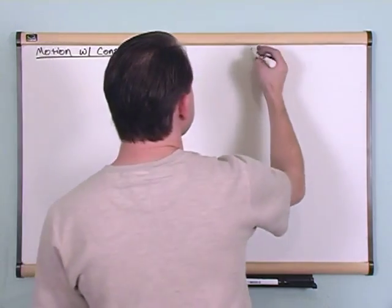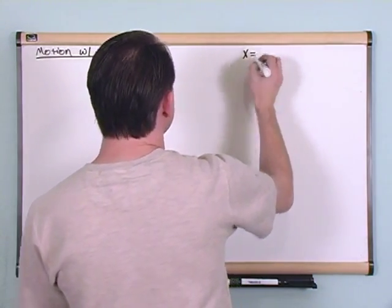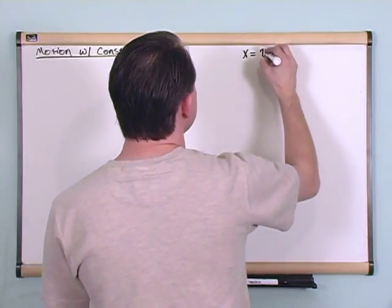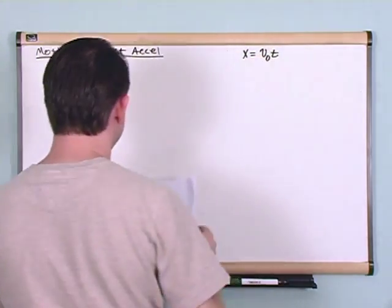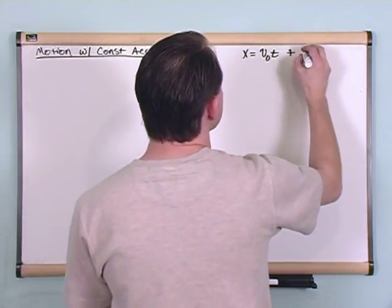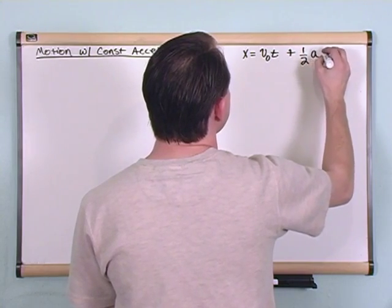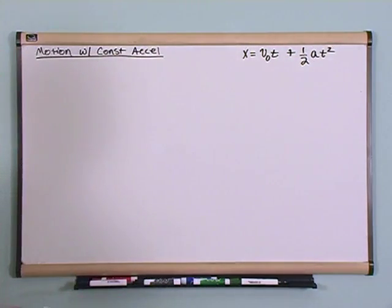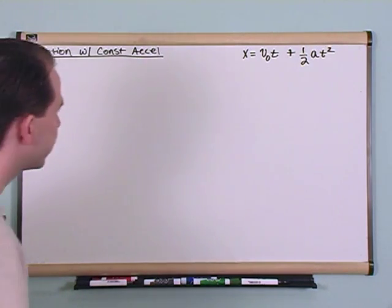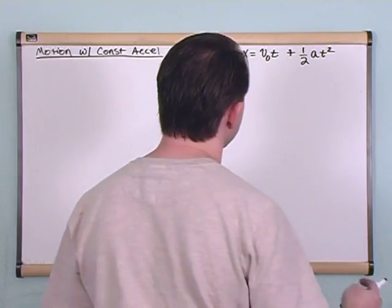The first equation is x is equal to v naught t, and I'll explain all this in a second, plus one half a t squared. You will see this in every physics book. It's some of the most fundamental equations of motion. It looks kind of daunting. Let's go ahead and break it down and I'll explain it to you here.